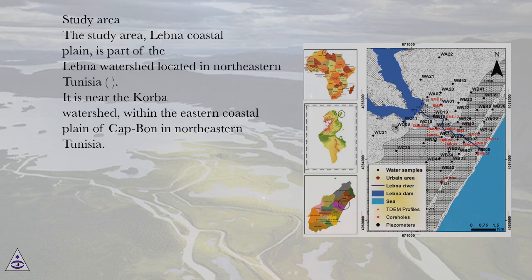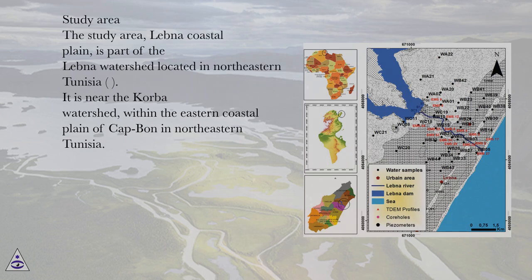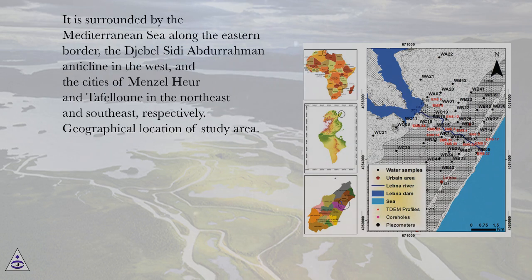The Study Area, Lebna Coastal Plain, is part of the Lebna Watershed located in northeastern Tunisia. It is near the Korba Watershed, within the eastern coastal plain of Cap Bon in northeastern Tunisia. It is surrounded by the Mediterranean Sea along the eastern border, the Jebel Sidi Abdurrahman Anticline in the west, and the cities of Menzel Heureux and Tafalin in the northeast and southeast, respectively.